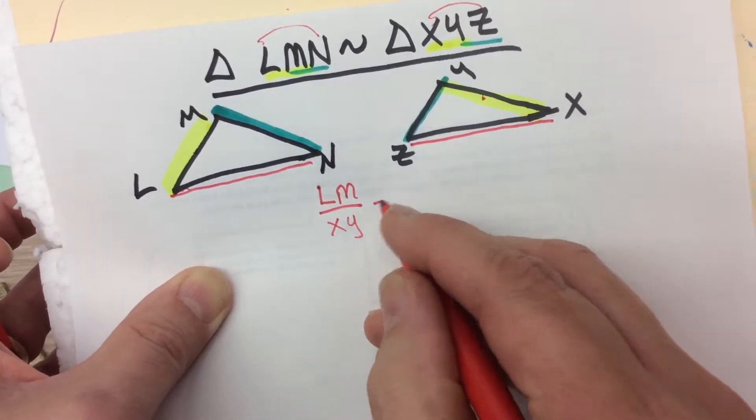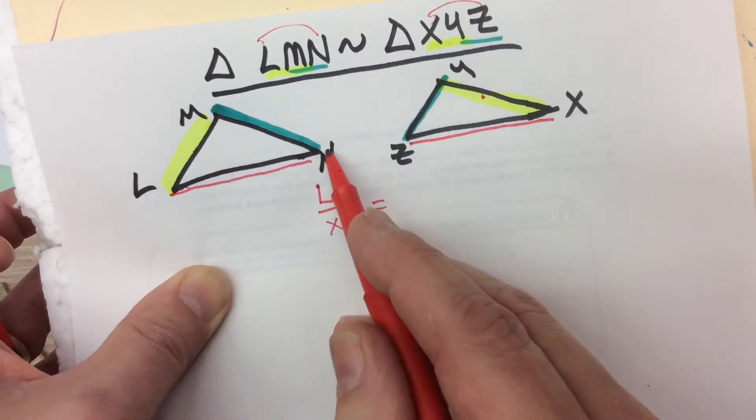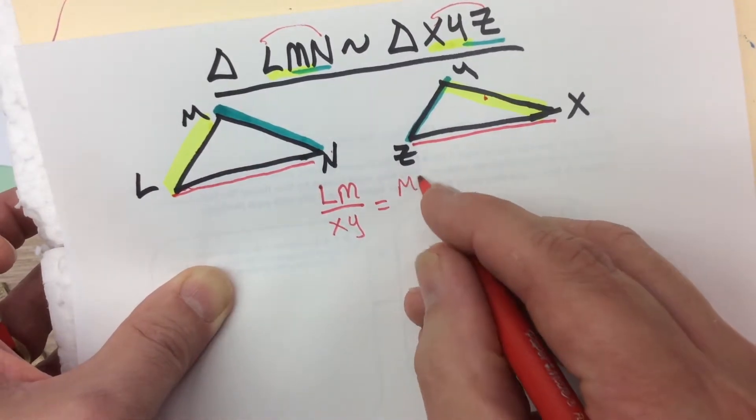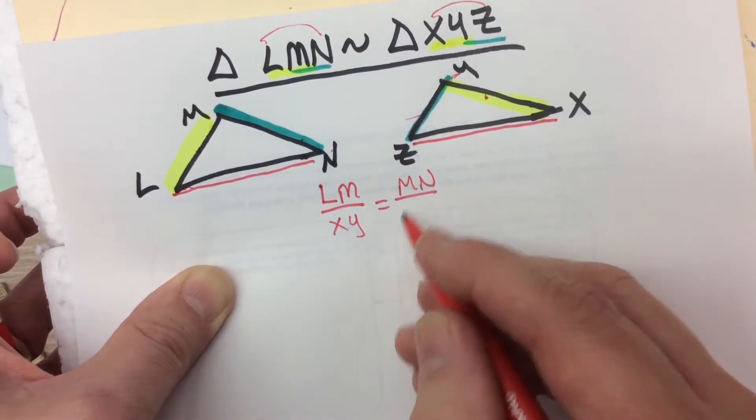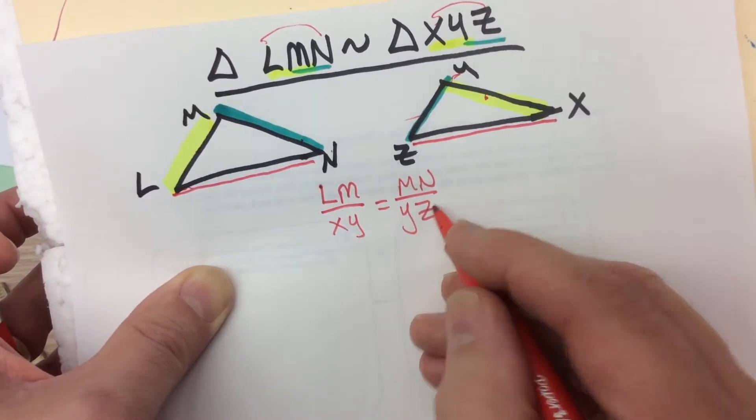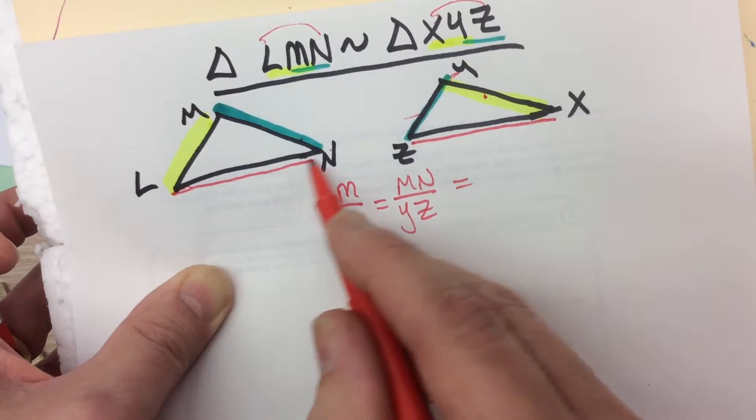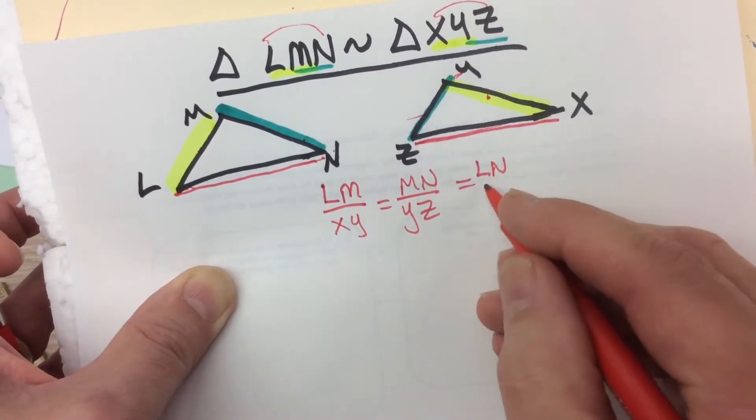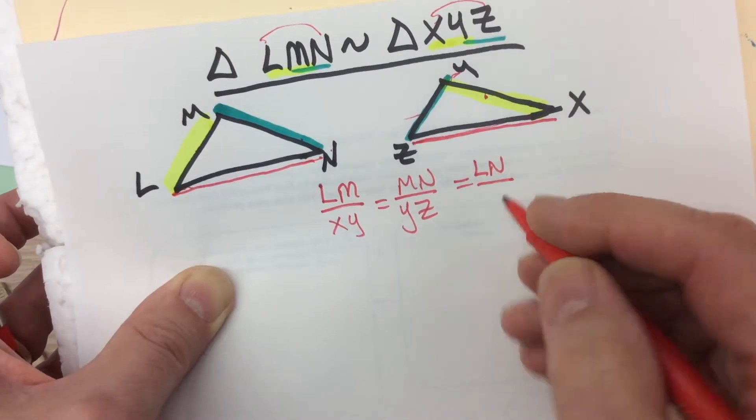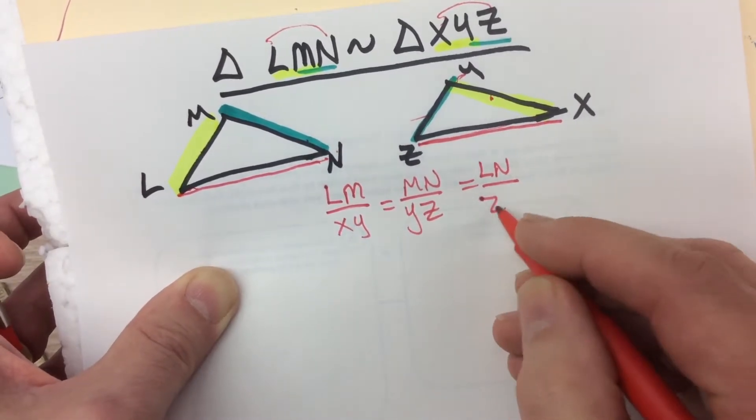The distance from L to M divided by the distance from X to Y is equal to the distance of M to N divided by the distance from Y to Z. And that's equal to the distance from L to N divided by the distance from Z to X.